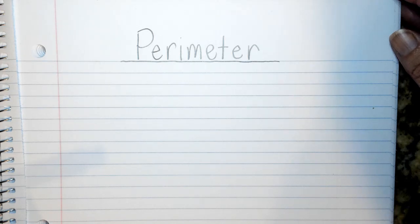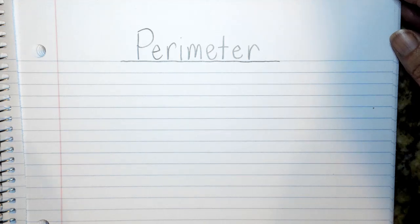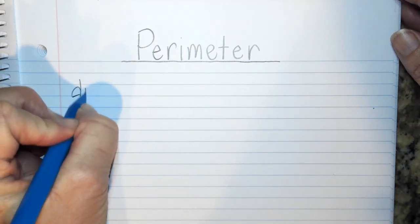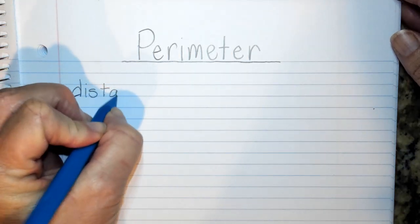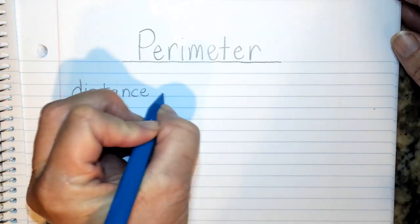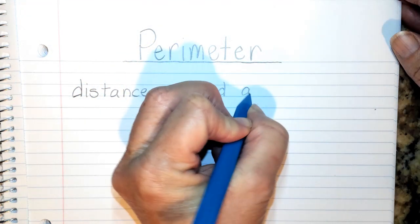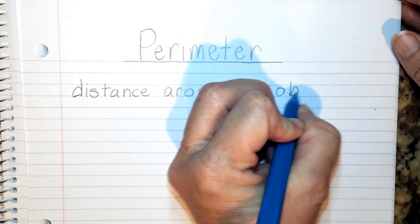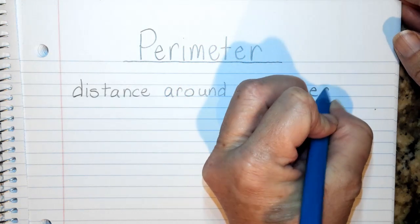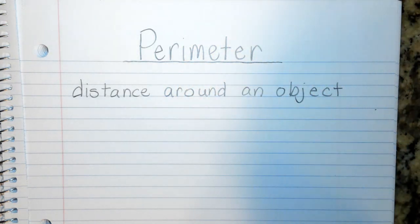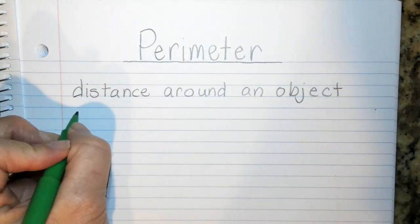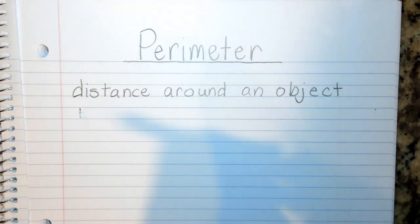If you think back to what is perimeter, when you thought about this in third and fourth grade, it was the distance around an object. Some examples—whoops, that doesn't work.